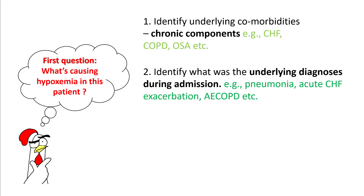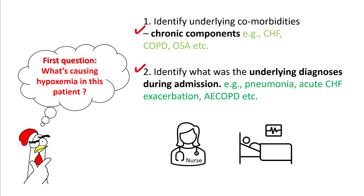Does the patient have heart failure, COPD, sleep apnea, etc.? Also know what the underlying diagnosis was during the admission — for example, the patient was admitted with pneumonia, acute heart failure exacerbation, etc. The person to ask would be the nurse who initiated the rapid response, or the patient if he can talk.